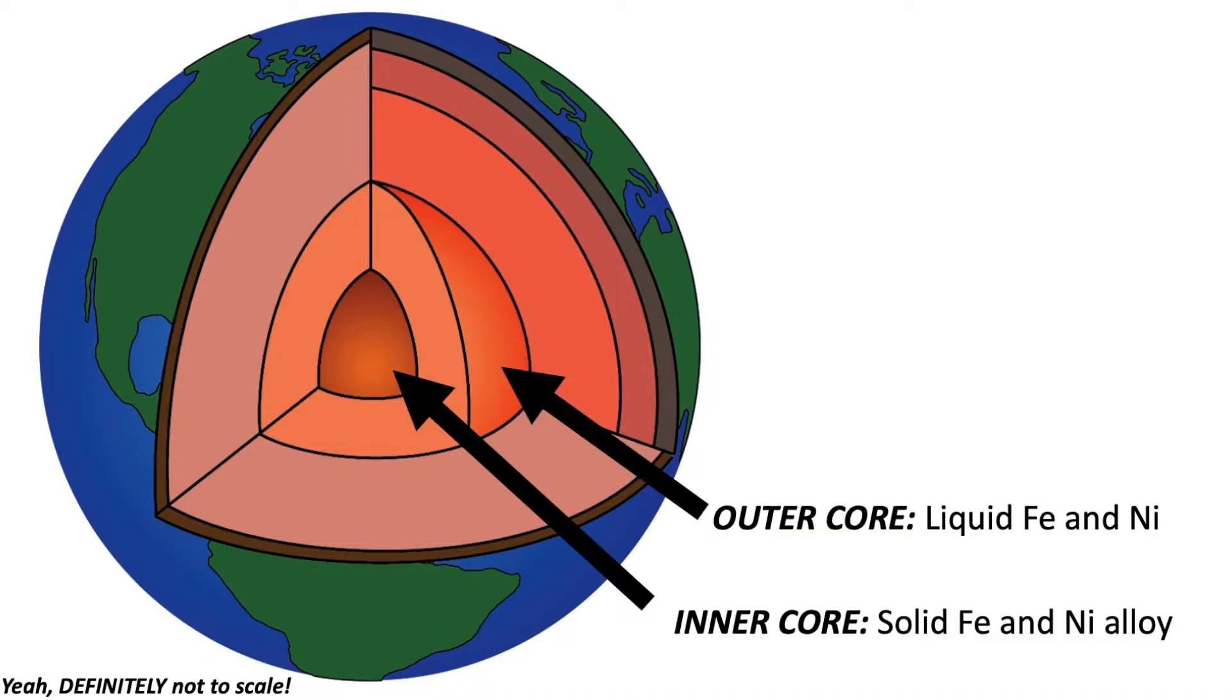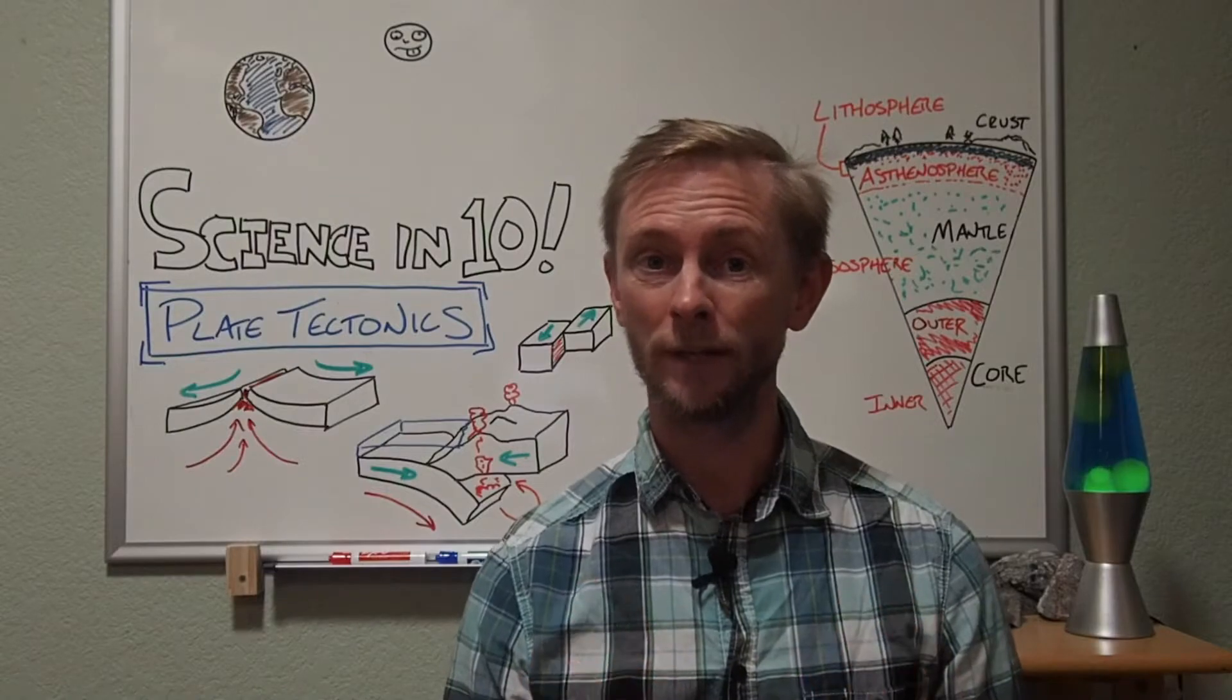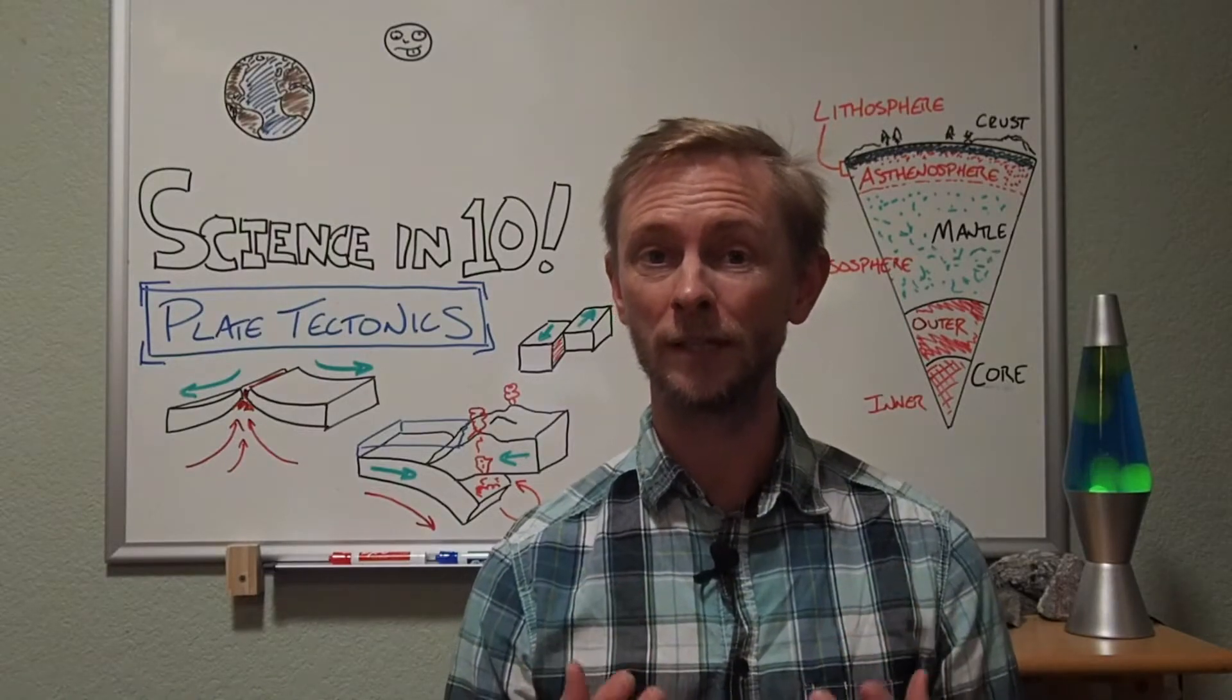Surrounding the inner core, we have the outer core. The outer core has the exact same composition as the inner core, but it is liquid. The outer core of the Earth is completely liquid.